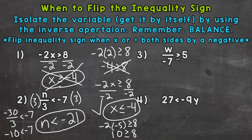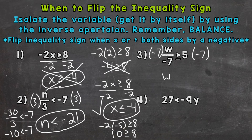Let's move on to number 3, where we have w divided by negative 7 is greater than or equal to 5. We're dividing the variable by negative 7, so we need to do the opposite — multiply by negative 7. We multiply both sides by negative 7, which isolates w. Since we multiplied both sides by a negative, we need to flip the sign. Positive 5 times negative 7 is negative 35.